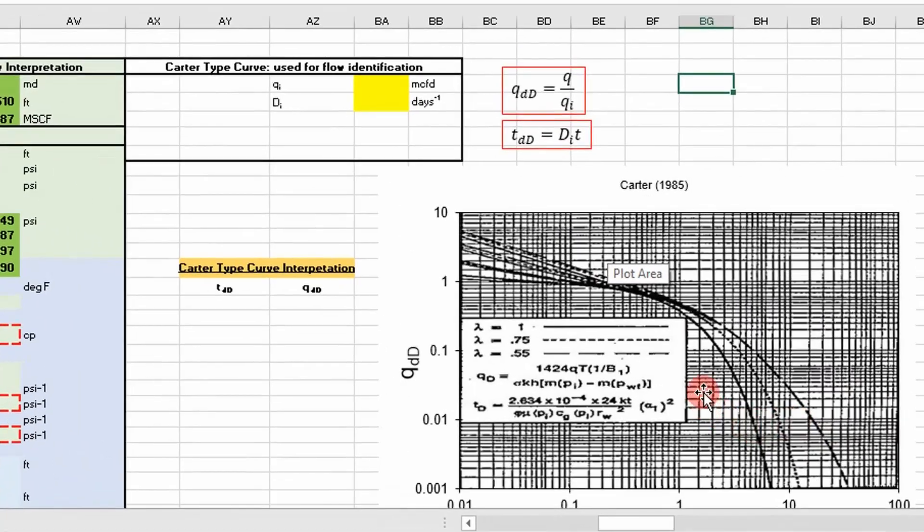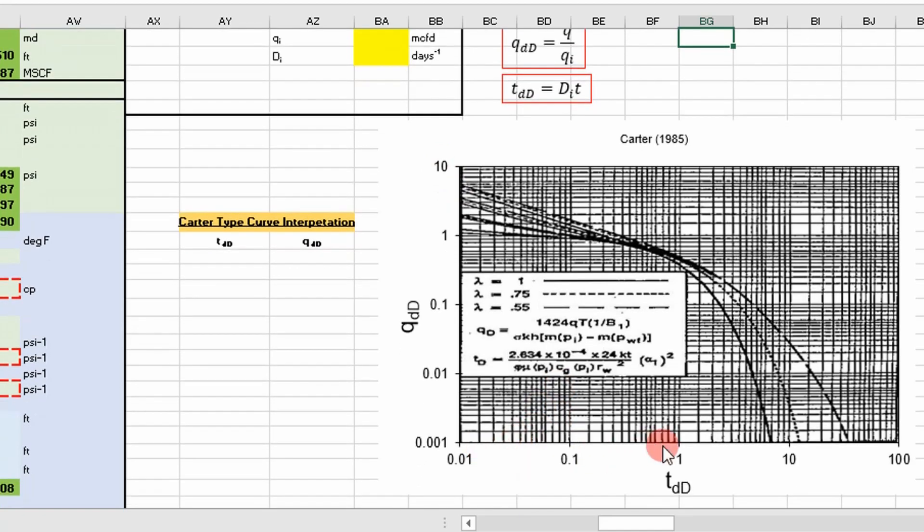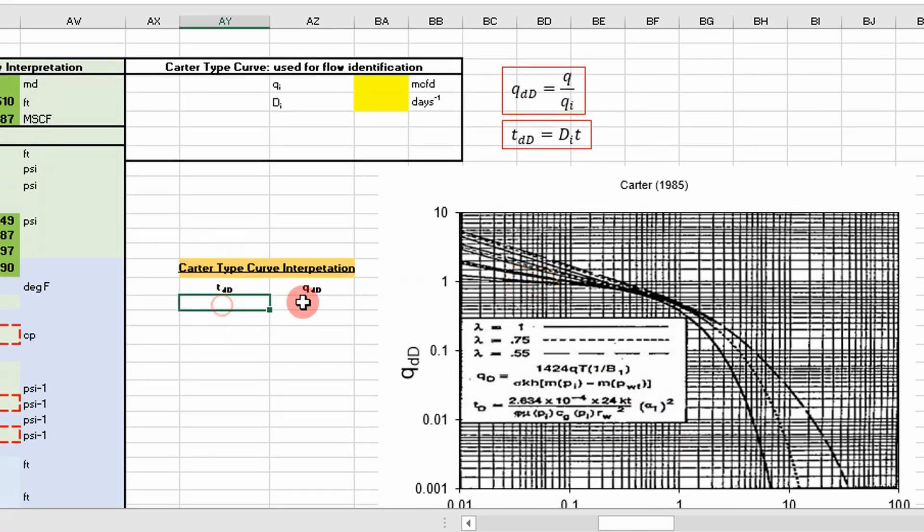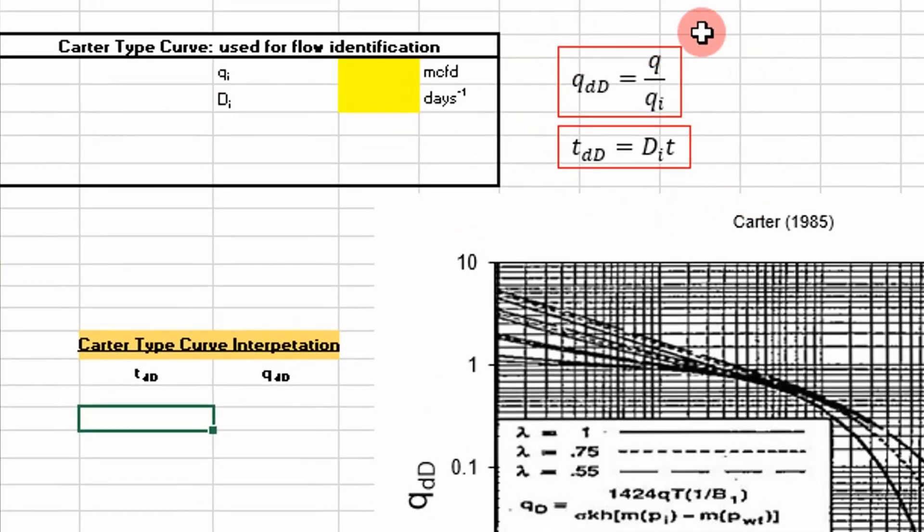So here I've put our Carter type curve in the background of this Excel graph, and I've just put the appropriate scale as we've seen, as it's been labeled. And so what we're going to do is I got two columns here, our dimensionless time and dimensionless rate. We're going to go ahead and plot our data points. But before that, if you recall, these are the equations, our initial guess. We're going to divide our rates by the initial rate, and then each time point we're going to multiply by the initial decline that we got from our rate time decline curve analysis.